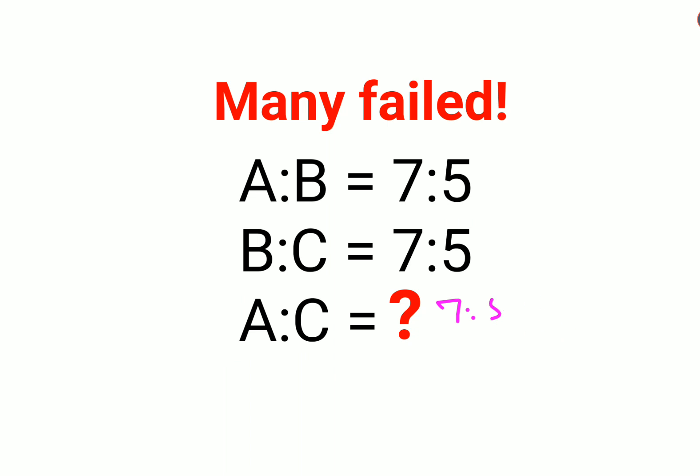Please understand when you have ratio, especially connecting ratios. So what do I mean by connecting? See here, this is B. Here also we have B. Basically they are saying A upon B equals to 7 upon 5. Correct? And B upon C equals to 7 upon 5. Correct?